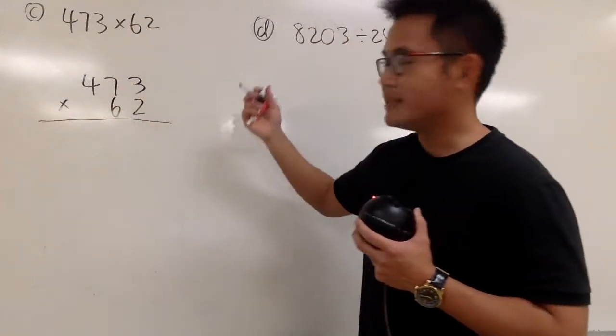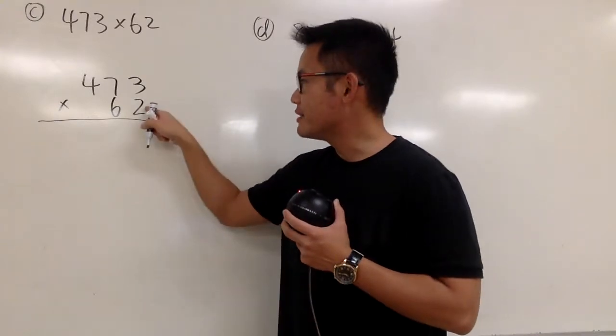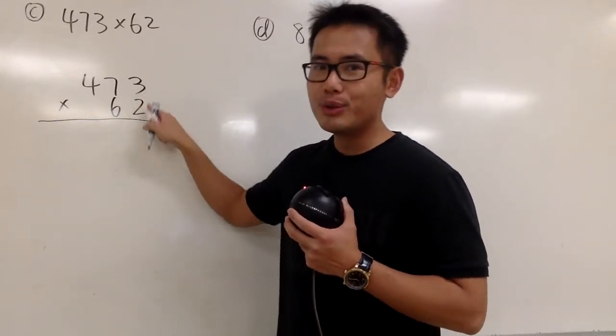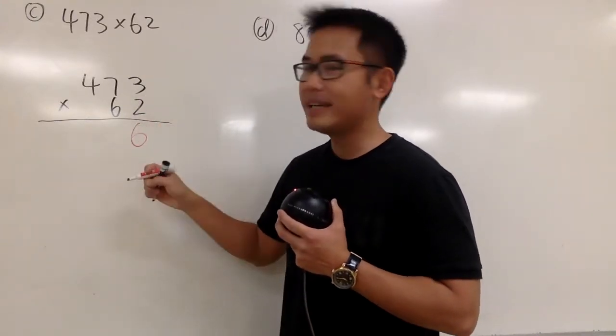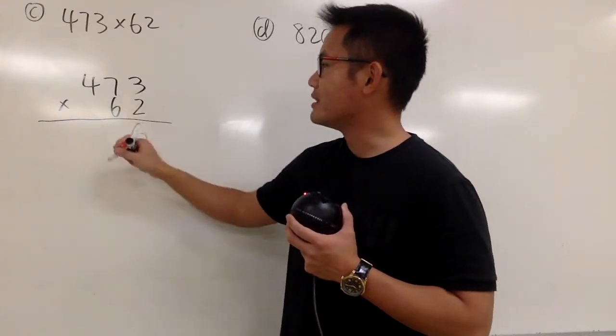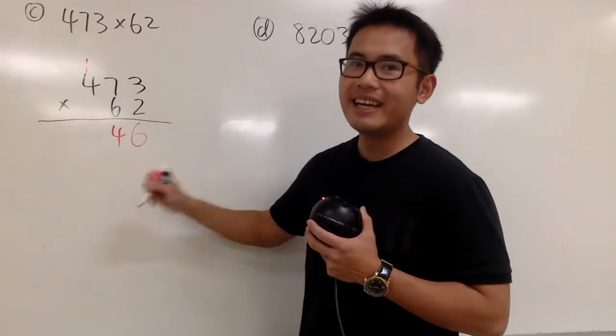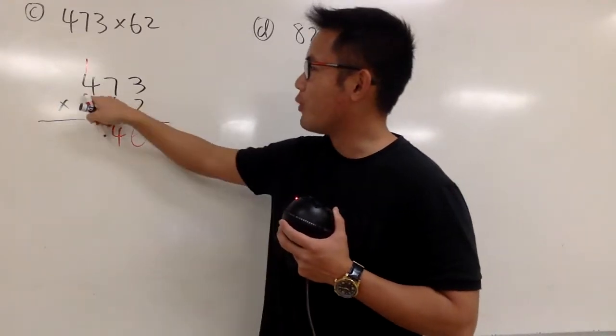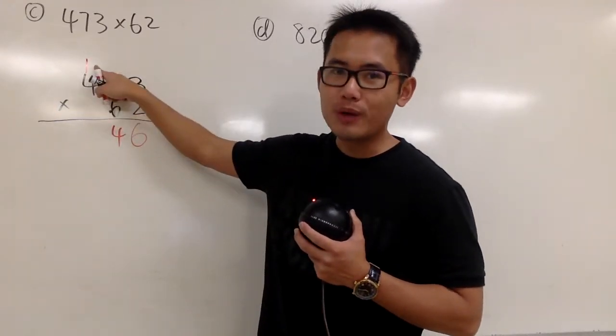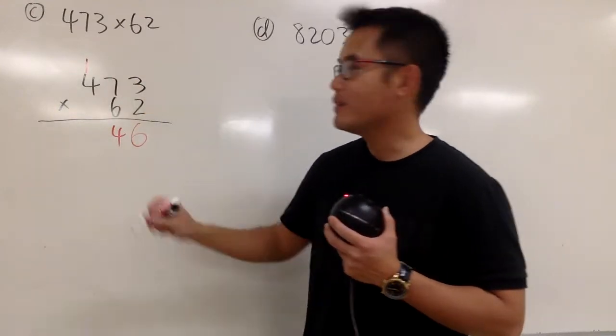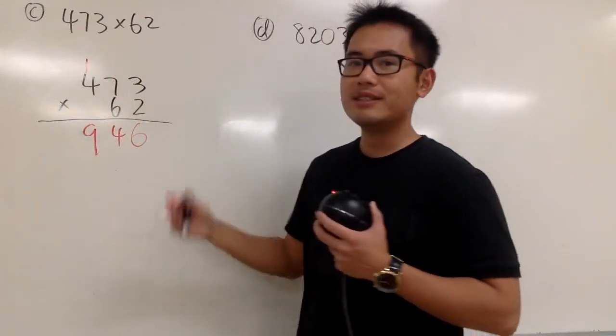And now we'll just proceed. First of all, we take this number, multiply with this. 2 times 3, we get 6. And we'll continue. 2 times 7 is 14. And we can write down 14, like this. And then, 2 times 4 is 8. But we have this 1. 8 plus 1, we get 9. So this is it.